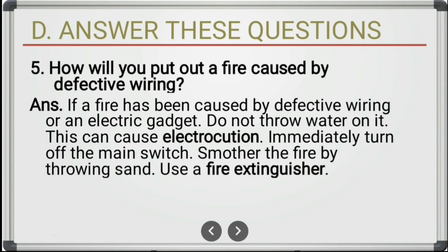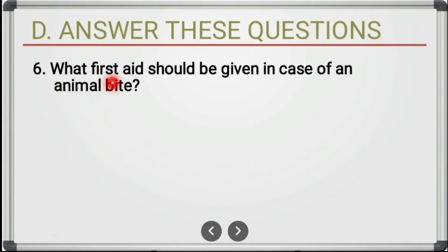Fifth long answer: how will you put out a fire caused by defective wiring? If a fire has been caused by defective wiring or an electrical gadget, do not throw water on it as this can cause electrocution. Immediately turn off the main switch. Smother the fire by throwing sand over it, or use a fire extinguisher.